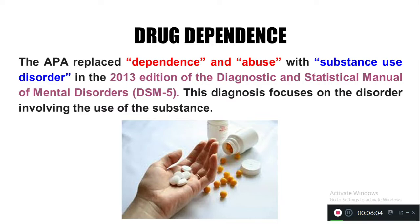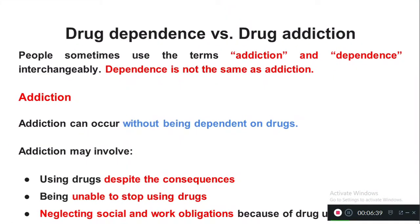The American Psychiatric Association replaced the terms dependence and abuse with 'substance use disorder' in the 2013 edition of DSM-5. The diagnosis of substance use disorder involves specific criteria. Nowadays we use the term substance use disorder instead of dependence and abuse.